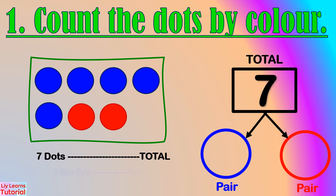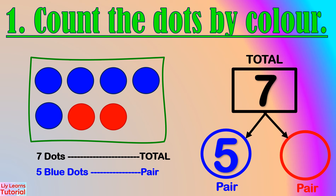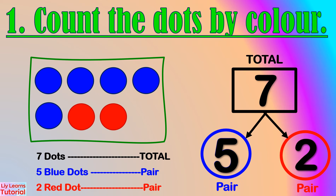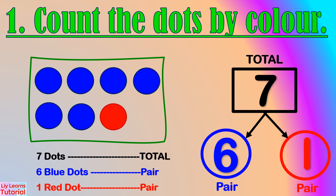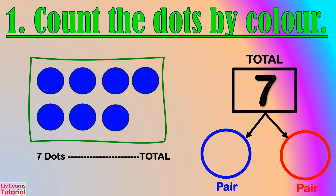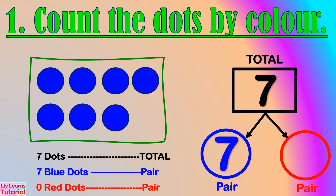Here, there are 5 blue dots and 2 red dots — the number pair is 5 and 2. There are 6 blue dots and 1 red dot — the number pair is 6 and 1. There are 7 blue dots and 0 red dots — the number pair is 7 and 0.